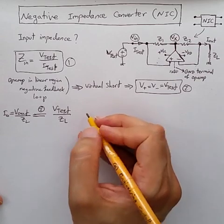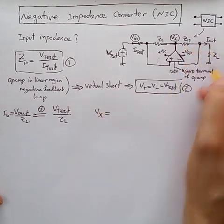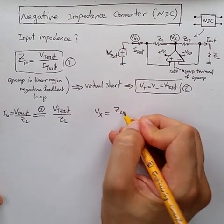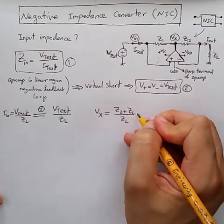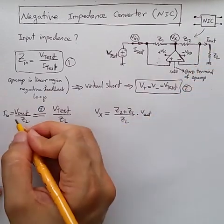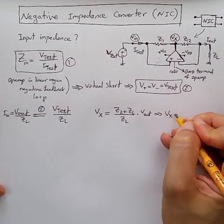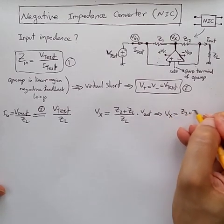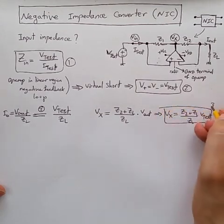So we can say V-x is just simply a voltage division, so it means Z-2 plus Z-L divided by Z-L times V-out, which is equal to V-test. So this is equation 3.